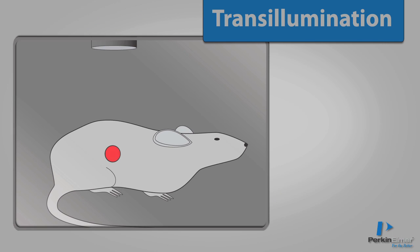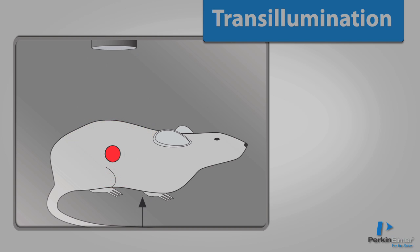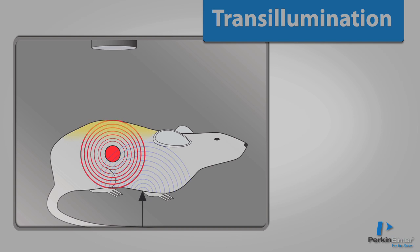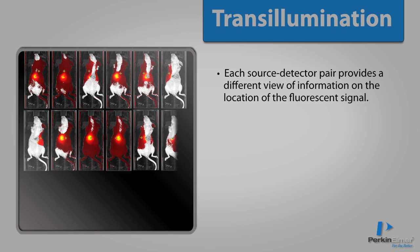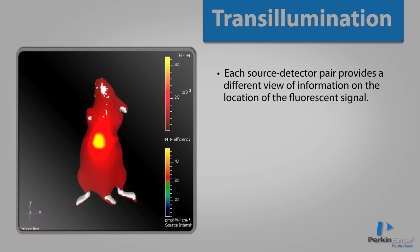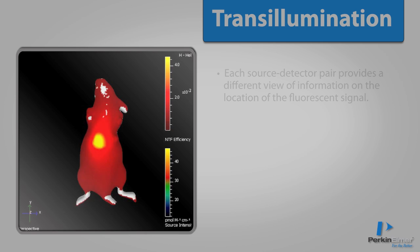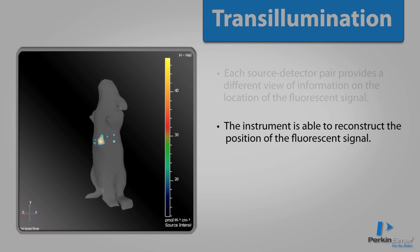In transillumination raster scanning, a light source moves from point to point, exciting the animal from below, which produces fluorescence emission data that can be detected from above. Each source-detector pair provides a different view of information on the location of the fluorescent signal. Using software algorithms based on complex tissue diffusion properties to combine these source-detector pairs along with the surface topography, the instrument is able to reconstruct the position of the fluorescent signal.